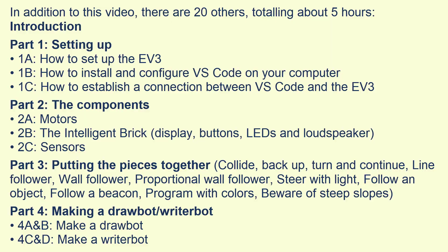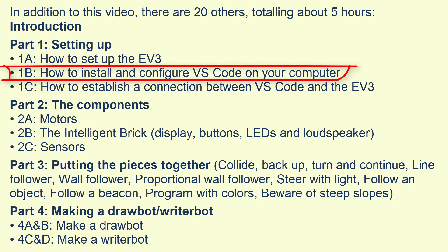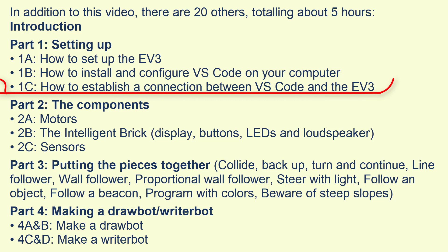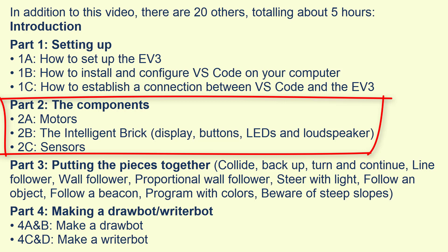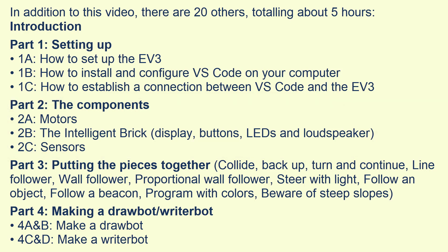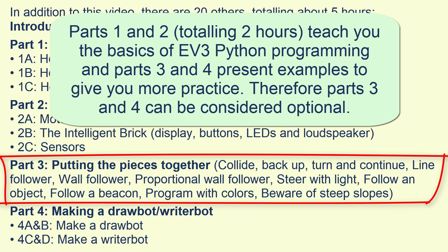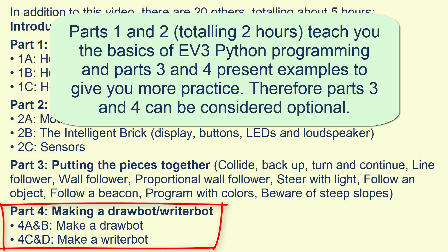In addition to this introductory video, this course consists of short videos showing you how to set up the EV3, how to install and configure VS Code on your computer, and how to establish a connection between VS Code and the EV3. Then there are several videos that guide you through writing and running EV3 Python scripts that interact with the EV3 motors, sensors, screen and buttons. There's also a longer video in which we develop scripts where the motors, the intelligent brick, and the sensors work together. Finally, we'll make a robot that can do writing and drawing, with a relatively sophisticated script.